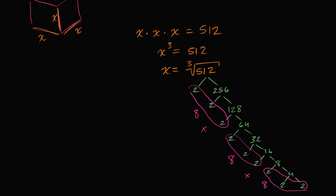So we could say that x, I'll do it over here, x is equal to the cube root of, instead of writing 512, I could write 8 to the 3rd power. Now what's the cube root of something to the 3rd power? It's just going to be this something. So x is going to be equal to 8.